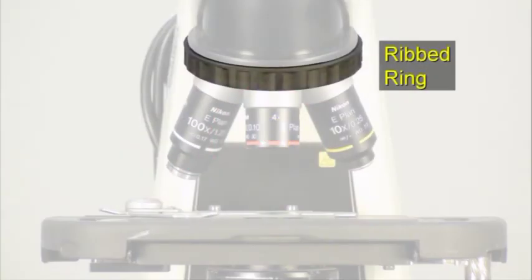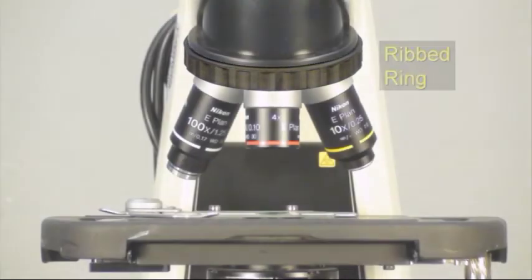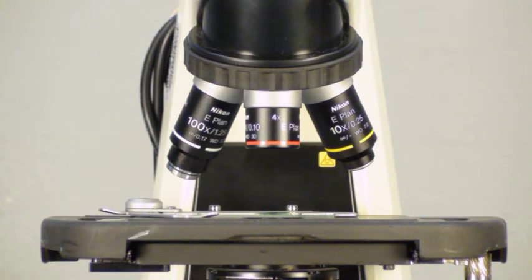The ribbed ring at the top is used to rotate the nose piece from one objective to the next. Each objective has a magnification stamp and a color-coded band for quick visual reference.